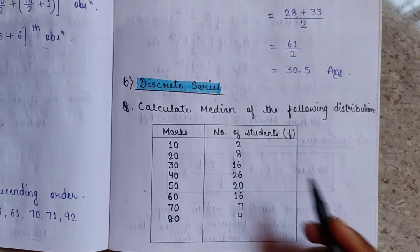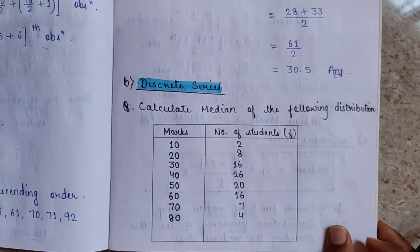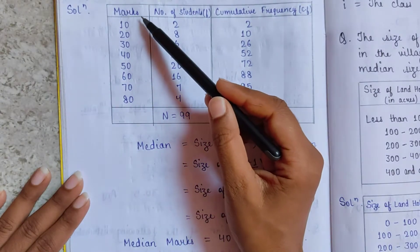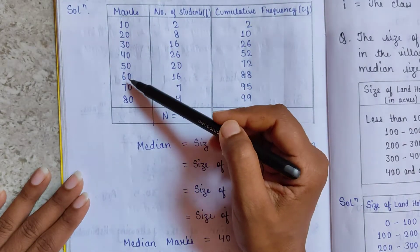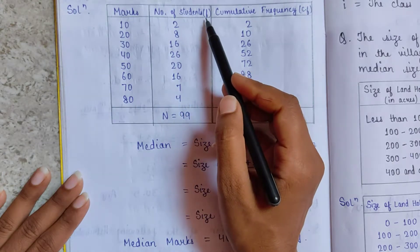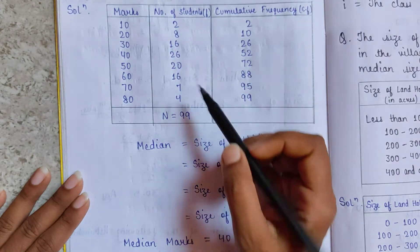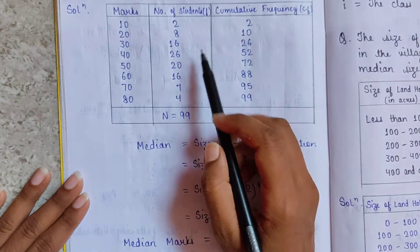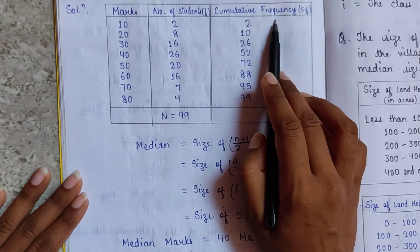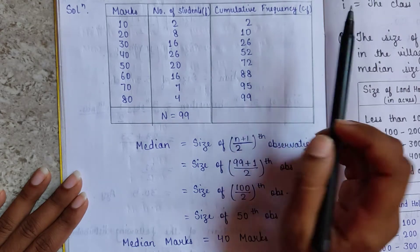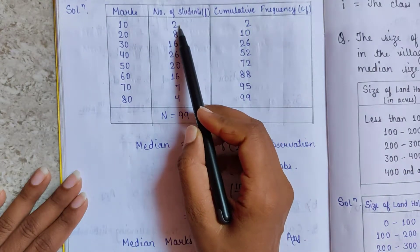So let's calculate the median of this distribution. The solution is: we have written marks 10, 20, 30, 40, 50, 60, 70, 80 and frequency. When we have a discrete series and we have to find the median, we need to take a cumulative frequency. Here the first frequency is 2.